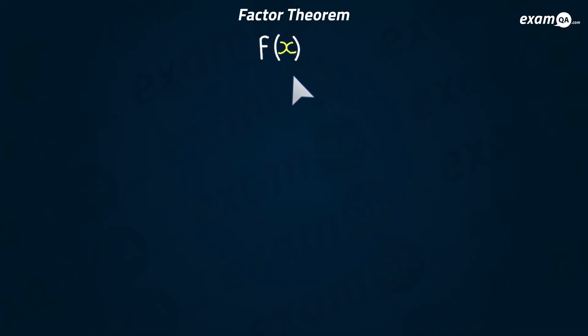So generally, if you've got a function, any function, if you put a number in as x, let's say that number is a, and it equals out to zero, it means a is a root of that equation. Which means, what is a factor? Well, x minus a is a factor. And this is called the factor theorem.